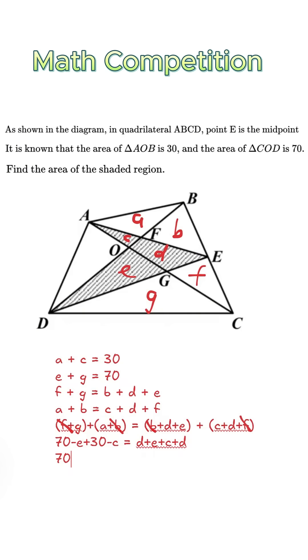Now move e and c to the right-hand side. The right side becomes two times d plus e plus c, which is twice the shaded area.